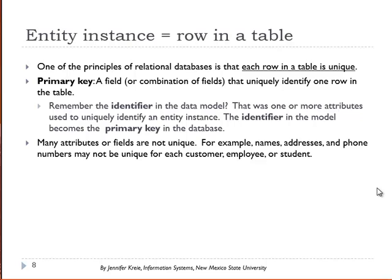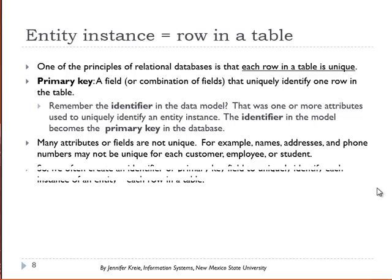Now, a lot of attributes or fields are not going to be unique. You're going to see a lot of people, a lot of instances of customer where the customers have the same name. And you might have customers with the same address or phone number. So these cannot be used to uniquely identify each row or each entity instance.